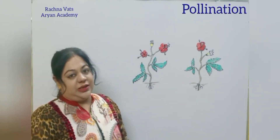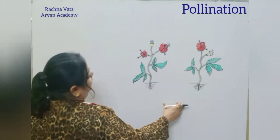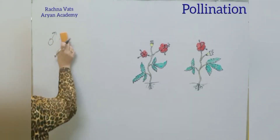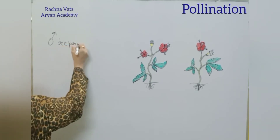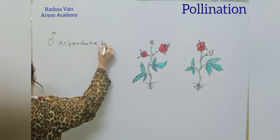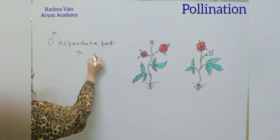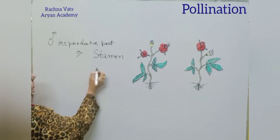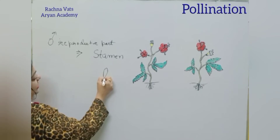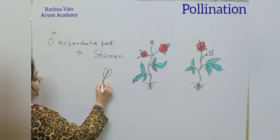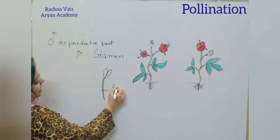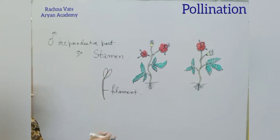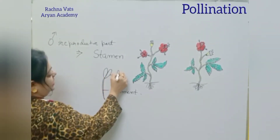What do you mean by pollination? Basically, the main reproductive part of the plant or the flower is the stamen. The stamen consists of two parts. Some lobes are present — a knob-like structure which is a lobe — that is known as the anther.